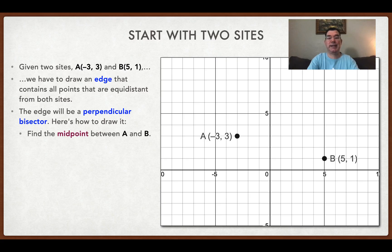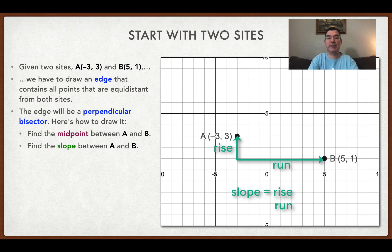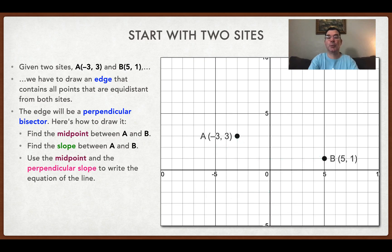We're going to find the midpoint between A and B. To find the midpoint you need to average the two x-coordinates you were given, and that will be your new x-coordinate, and then you will average the two y-coordinates that you were given, and that will be your new y-coordinate. Once we have that point, we are going to find the slope between the two sites, and we are going to use that slope to find a perpendicular slope. We're going to use that perpendicular slope and the midpoint to write the equation of a line, and that line is going to be our edge — the perpendicular bisector.